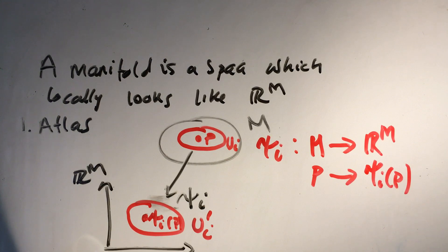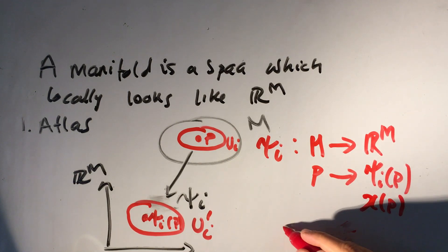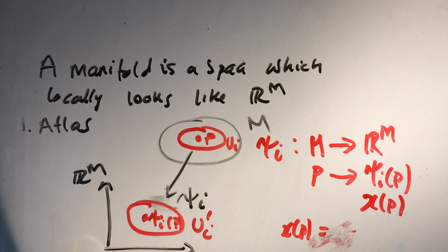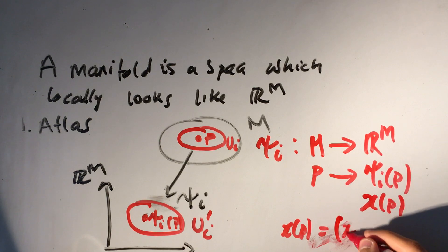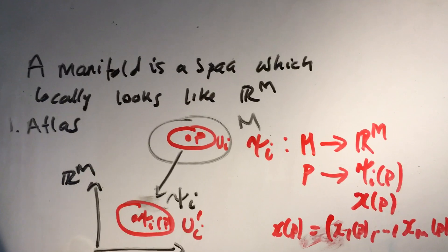But what's interesting now is that because this point is mapped to the real corner space, now this point is associated with coordinates. So we can write instead of ψ of P we can say x of P, where x of P is equal to (x^1 of P, ..., x^m of P). Is that clear?